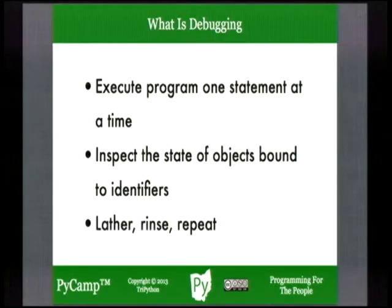Normally, debugging in Python and most other languages involves executing a program one statement at a time and investigating the state of your namespaces as well as where your program is in the execution order. If you can inspect all these things, you can verify along each step that your program is doing what you expect. You continue executing one statement at a time, inspecting the state of the objects in your program — lather, rinse, and repeat — until you find something not what you expected. Testing is a matter of having an anticipated result and an actual result and comparing the two.